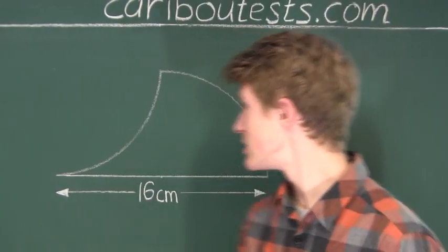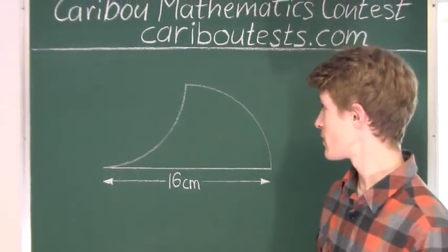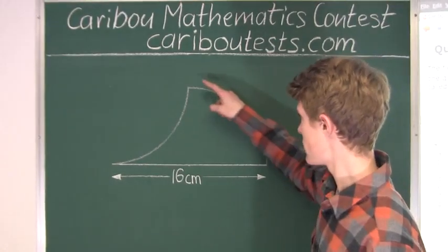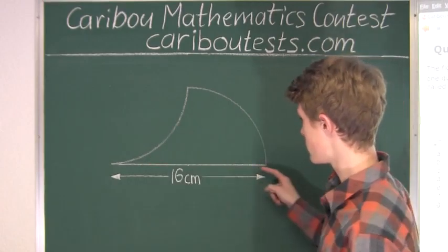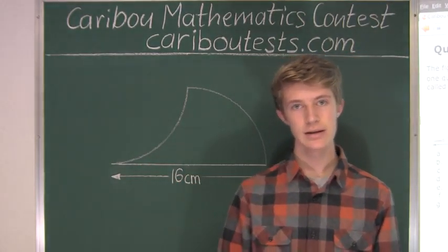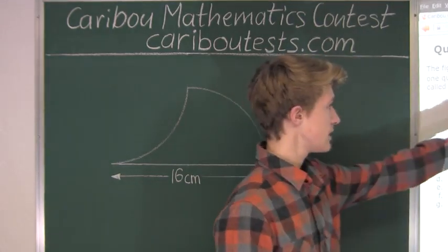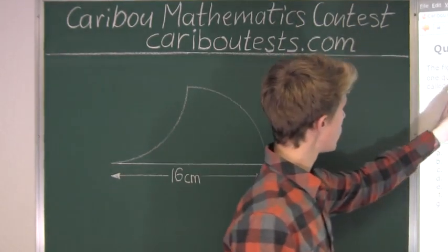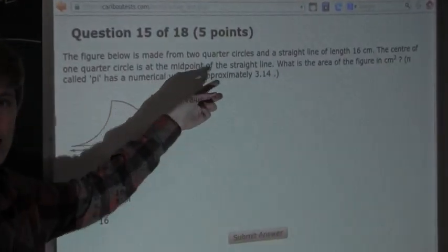Okay, so here we have this same figure. From the question, we already know that this is made up of two quarter circles and the line at the bottom which is 16 cm long. Also, a hint from the question is that the center of one quarter circle is at the midpoint of the straight line.